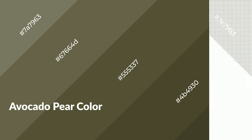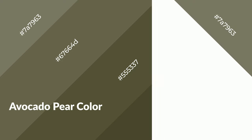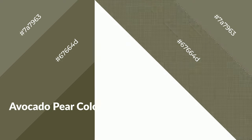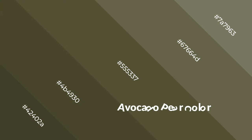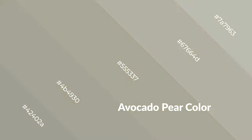Warm colors are symbols of warmth, fire, heat, and sunshine. They also evoke joy, passion, love, and even anger emotions. You can see them used in restaurants and gyms.